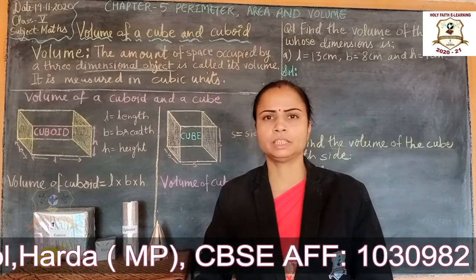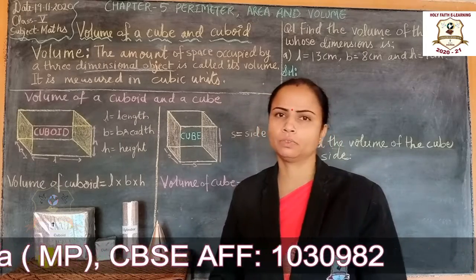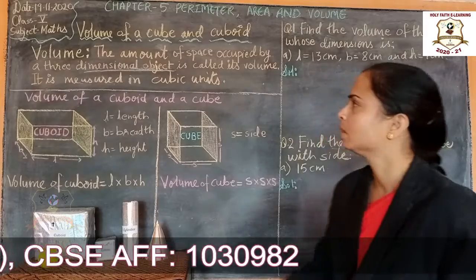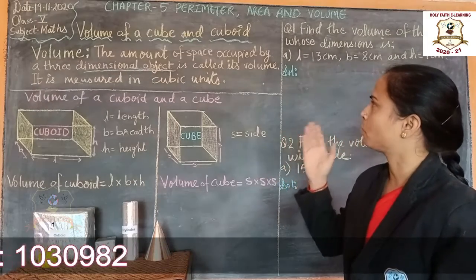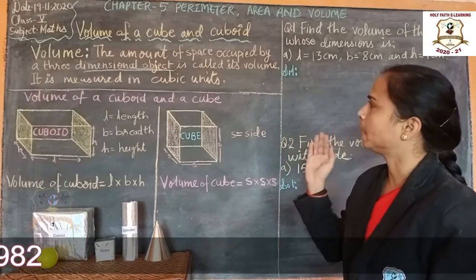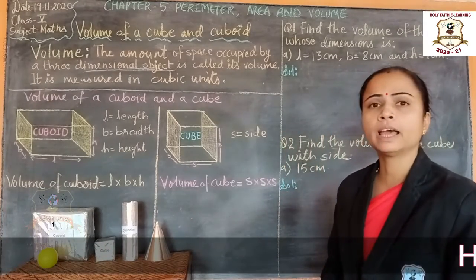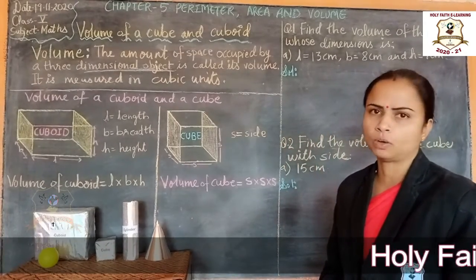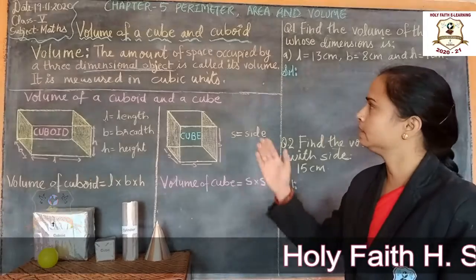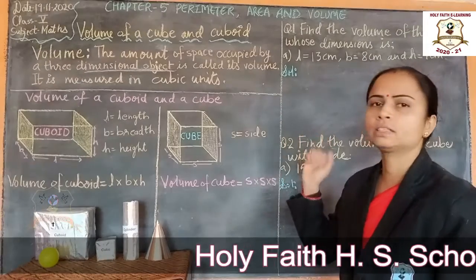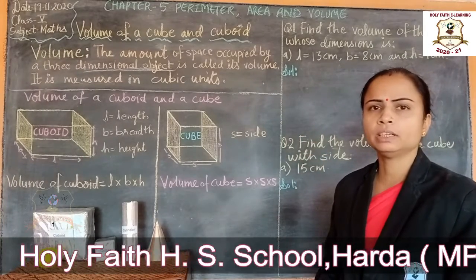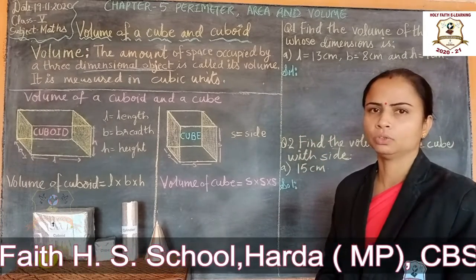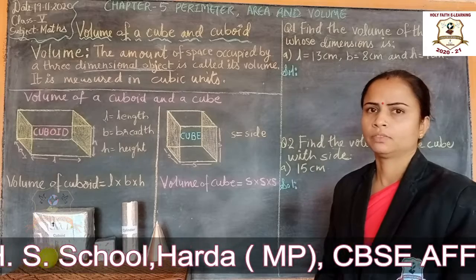First, we see what is volume. The amount of space occupied by a three-dimensional object is called its volume. It is measured in cubic units.